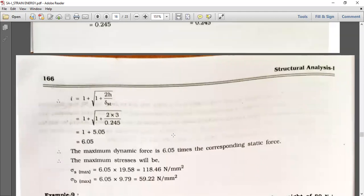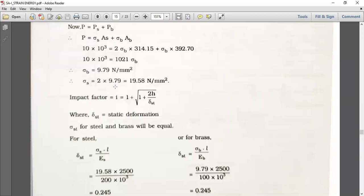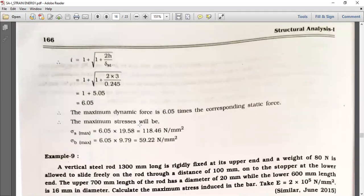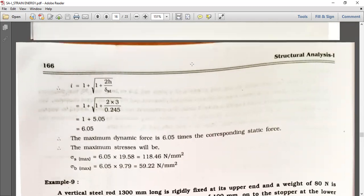Putting this value into the above equation, we can get the impact factor as 6.05. The maximum dynamic force is 6.05 times the corresponding static force. The maximum stress will be sigma S maximum equals 6.05 times 19.58, equals 118.46 Newton per mm square, and sigma B equals 59.22 Newton per mm square.